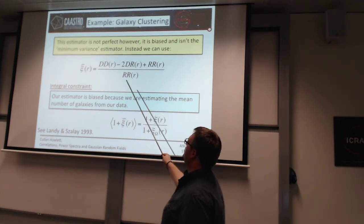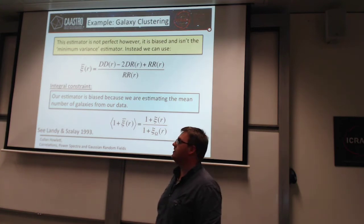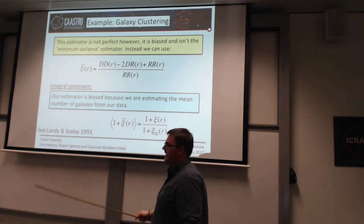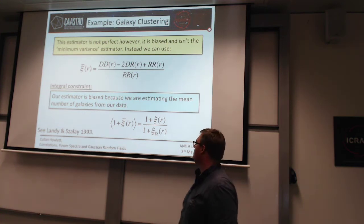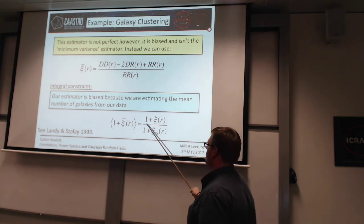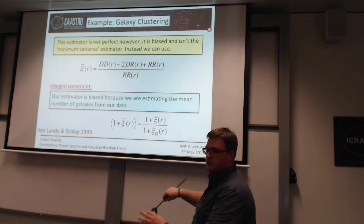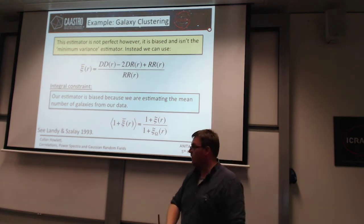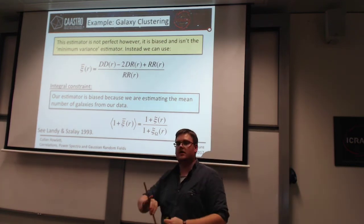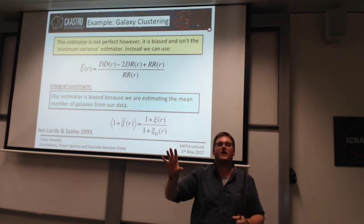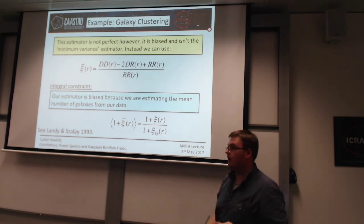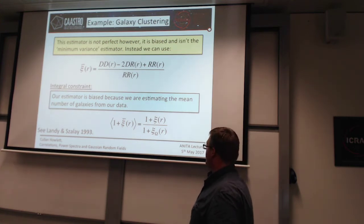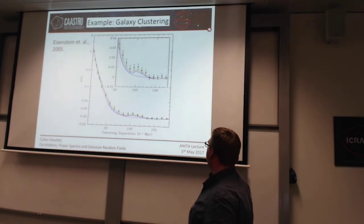The previous estimator is also biased because we have to estimate the mean number of galaxies from our data. This gives you something called the integral constraint — the average correlation function across your full dataset. The simplest way to imagine this: if you've got galaxies in a patch and you haven't observed the whole sky, this integral constraint drops out from the fact that you have a survey mask. It would also arise if you had gaps or patches in your data.